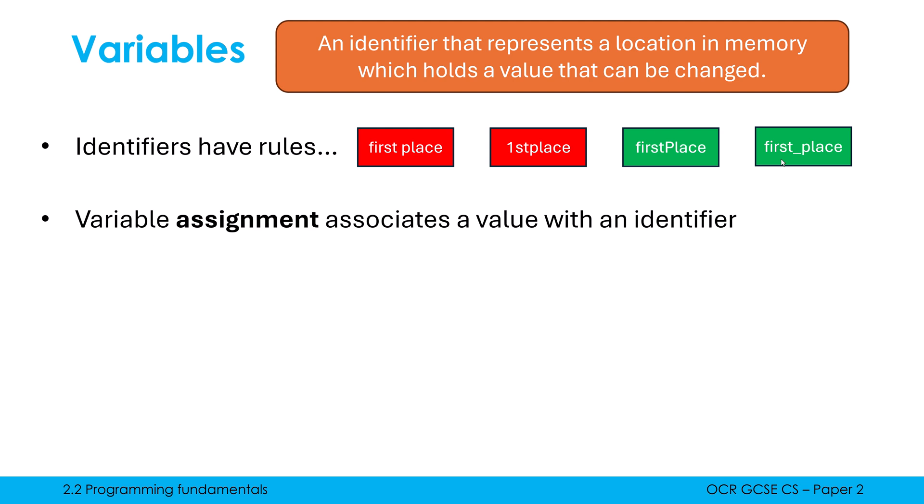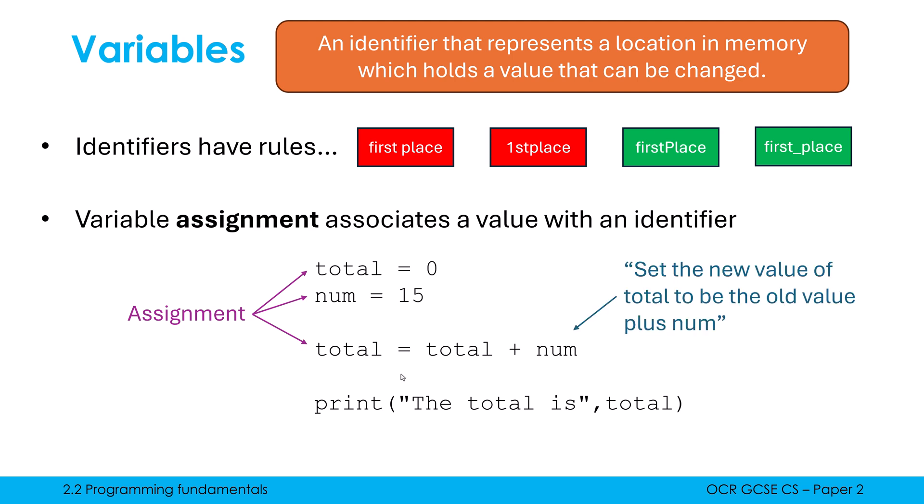Another keyword is assignment. Variable assignment is when we associate a value with an identifier. I think up a name, I then give it a value - that is what assignment is. Here is relatively simple code. We've got two variables being used here: total and num. We assign values using equal signs, so the equal sign doesn't mean the same thing as maths - it's not equality, it means total is now set to be zero. This third line, total equals total plus num, demonstrates that the equal sign is not equality in programming because clearly this is not an equal statement - a maths teacher would hate a statement like this.